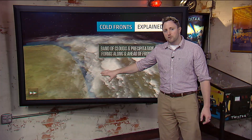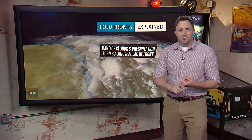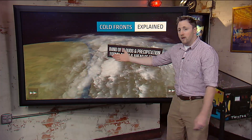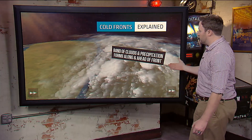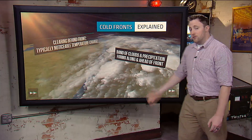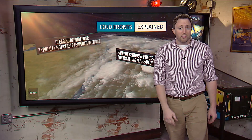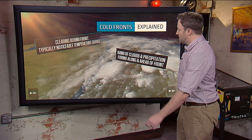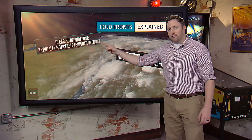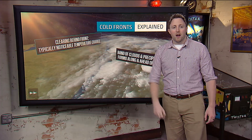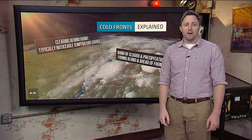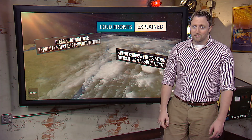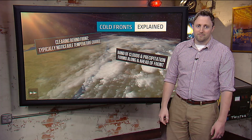Out ahead of that frontal boundary, you'll get clouds that will develop along and ahead of that frontal boundary. That's also where you'll find thunderstorms and rain clouds. Behind the front, where the air is cooler and drier, that's where you'll see your sunny, cooler weather.